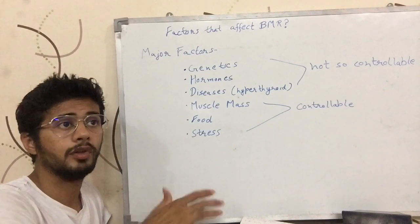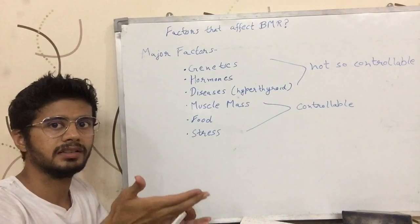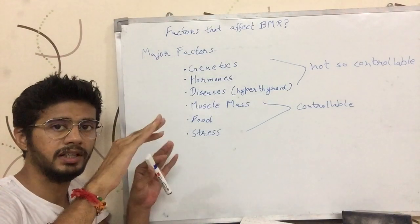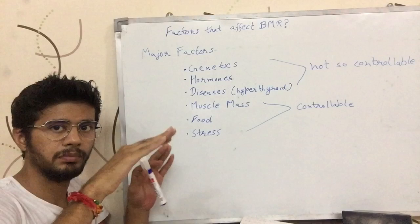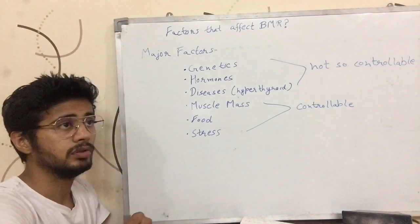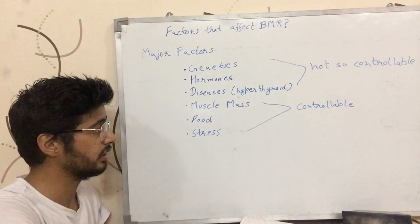The second controllable factor is food — the amount of food that you eat. If you are eating too much food, your BMR is likely to increase. If you are eating too little food, your BMR is likely to decrease. So BMR also depends on the amount of food that you eat.